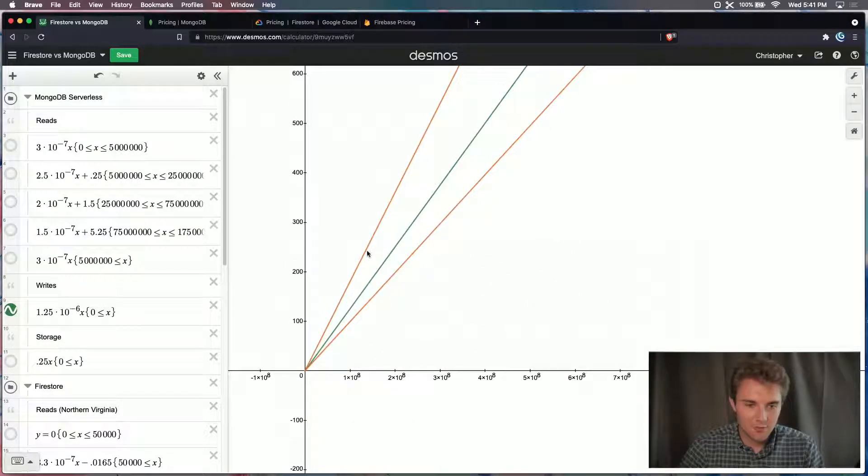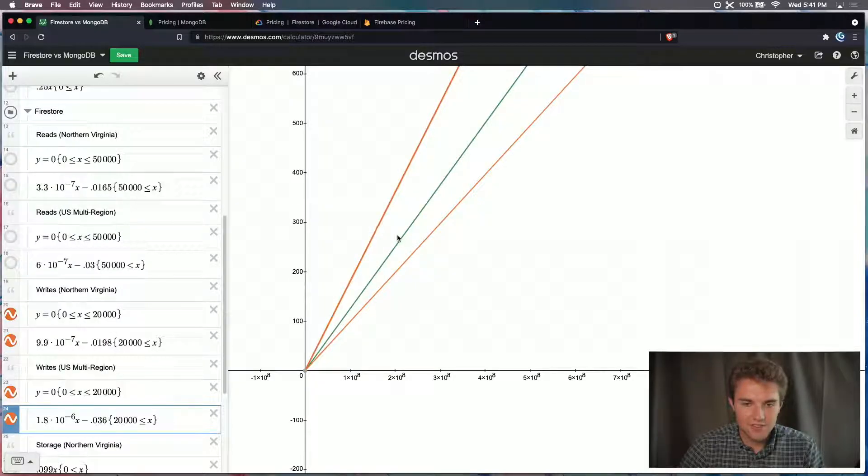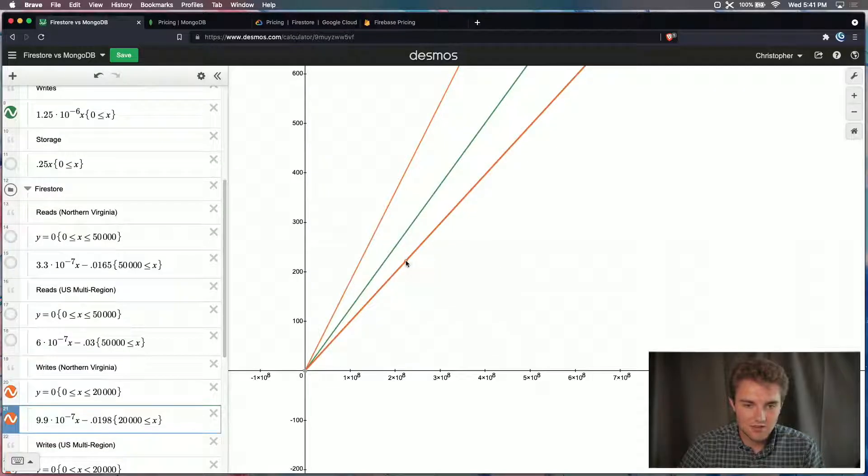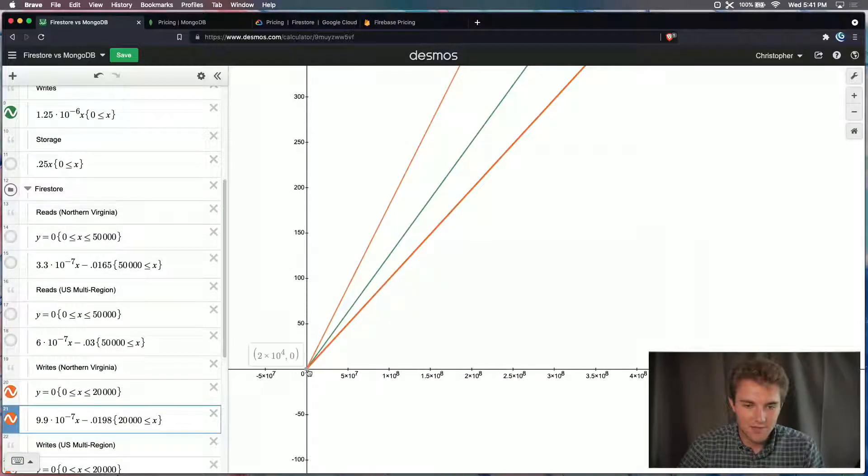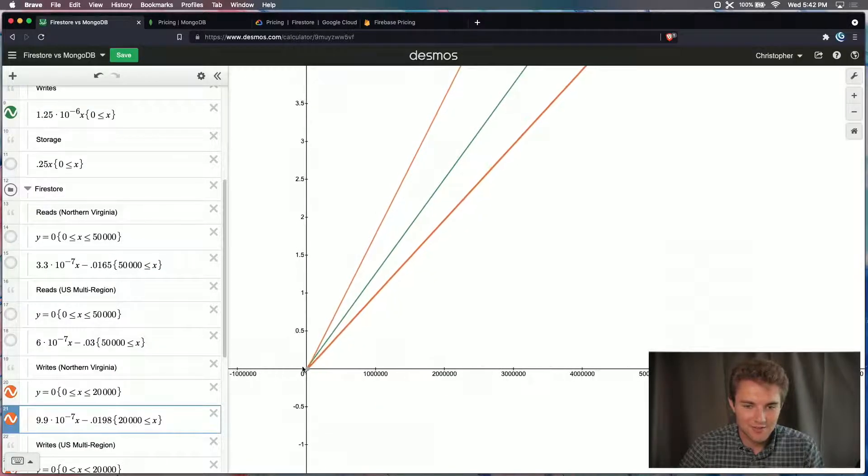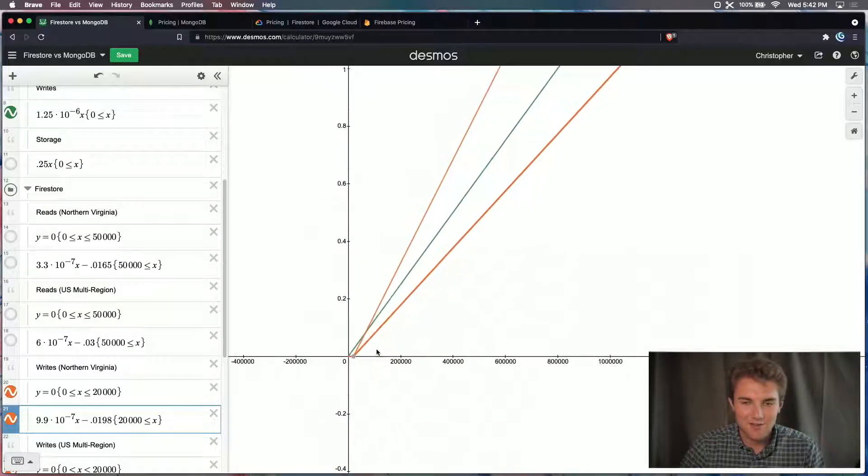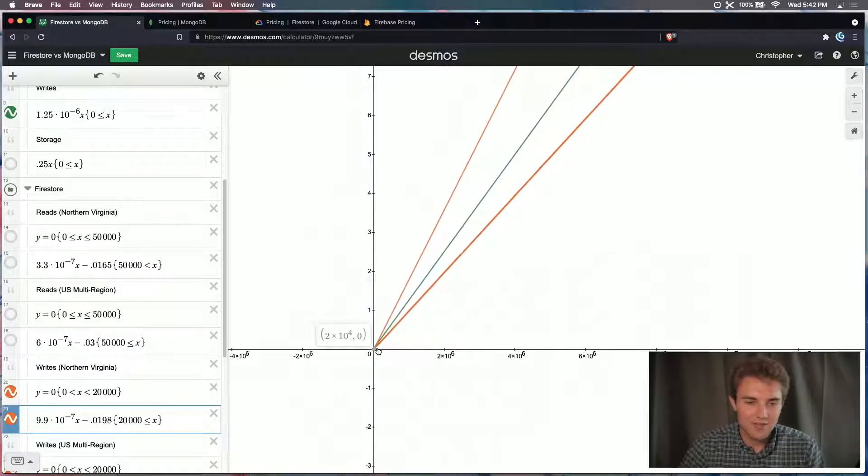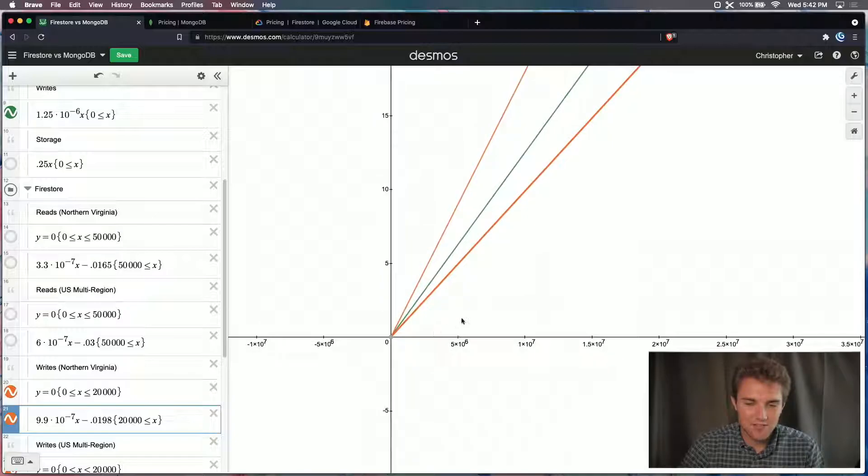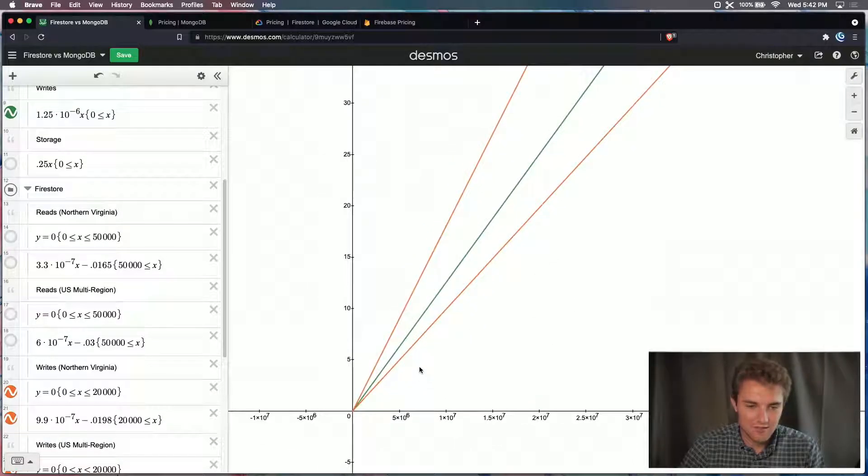So as you can see, writes scale linearly for all three of these, multi-region, MongoDB, and Northern Virginia. And again, we have a very small free tier for Cloud Firestore. I have to zoom in so much to even get there. But you can see here that there is a little bit of a benefit from the free tier from Firestore. And that's on a monthly basis, I'm pretty sure. Don't quote me on that. But here you can see the pricing is kind of give or take, depending on how you're storing your data in Cloud Firestore. MongoDB kind of sits right in the middle.